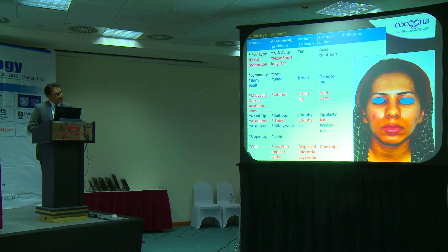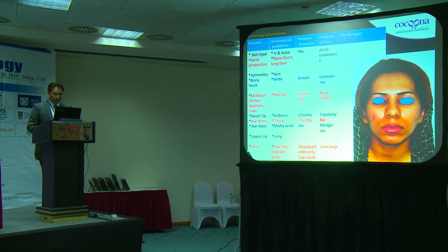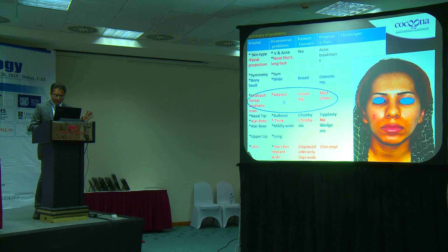After the analysis is complete, we put all findings into a chart showing all the anatomical problems the patient has, whether each is concerning to the patient or not, and based on that we propose a plan. We also document the challenges, potential complications, and what is possible versus what is not possible. In this particular patient, the problem is more in the mid-vault area where there is some broadening, and then in the nasal tip area.